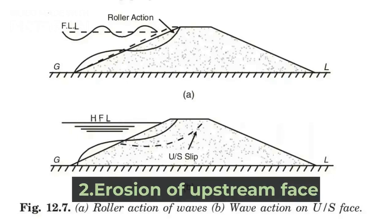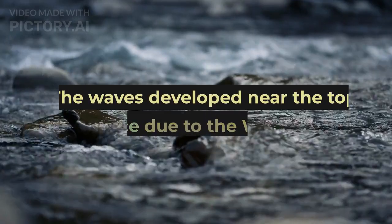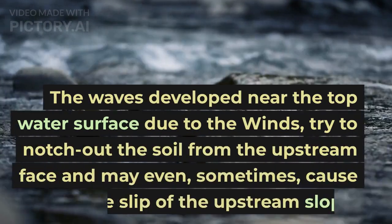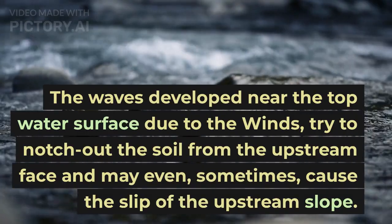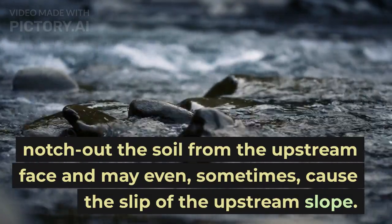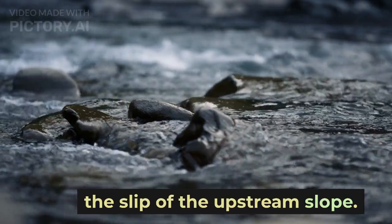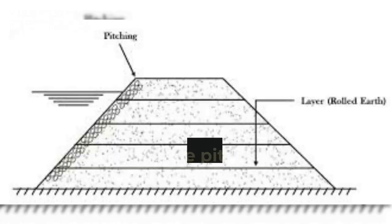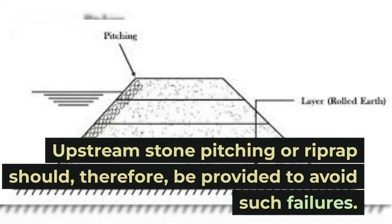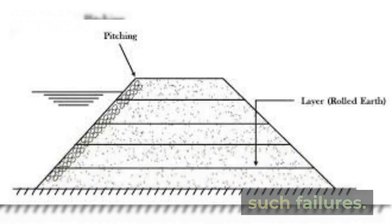2. Erosion of Upstream Face. The waves developed near the top water surface due to winds try to notch out the soil from the upstream face and may even sometimes cause the slip of the upstream slope. Upstream stone pitching or riprap should therefore be provided to avoid such failures.